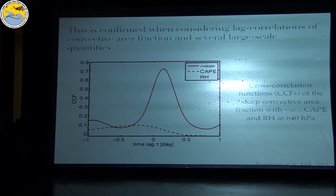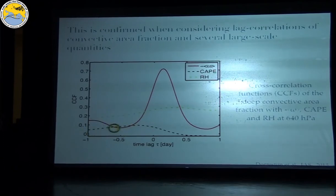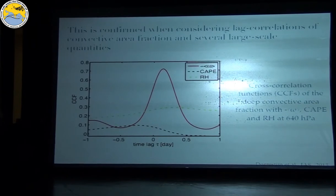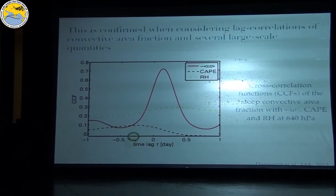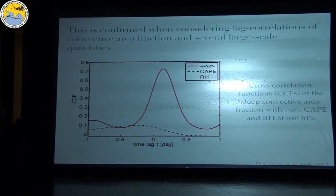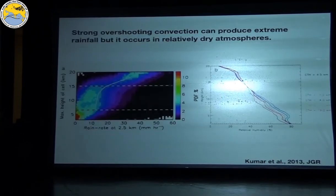Lag-correlation analysis confirms this: CAPE (instability) has a very weak correlation with convective area fraction and leads convection slightly, then drops away. Relative humidity in the middle troposphere has a higher correlation than CAPE — the area that's raining is more related to mid-tropospheric relative humidity than to instability. Large-scale vertical motion has the highest correlation at zero lag, and both vertical motion and humidity peak just after the rainfall peak, indicating strong two-way interaction between vertical motion and convection.